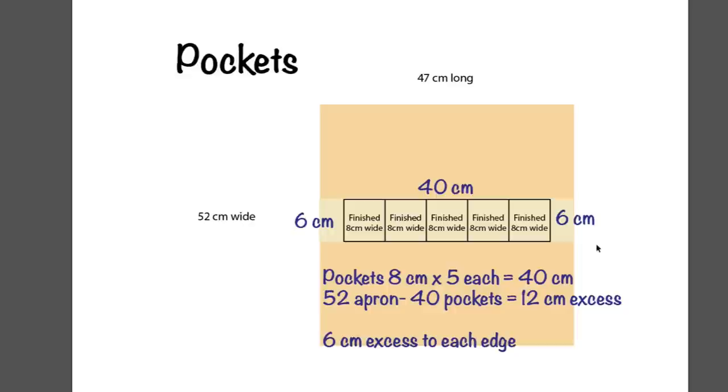The finished width of each pocket is 8 cm. Now we need to determine how much extra fabric is going to be hanging out the edge to reach the end of the apron on each side. We know that we have 5 pockets each, and they're 8 cm wide, so that's 40 cm. Our apron is 52 cm, which does include the seam allowances, minus the 40 cm for the pockets, which leaves 12 excess. And we divide that by 2 to put it evenly on each edge. So what we end up with is 6 cm of fabric here.